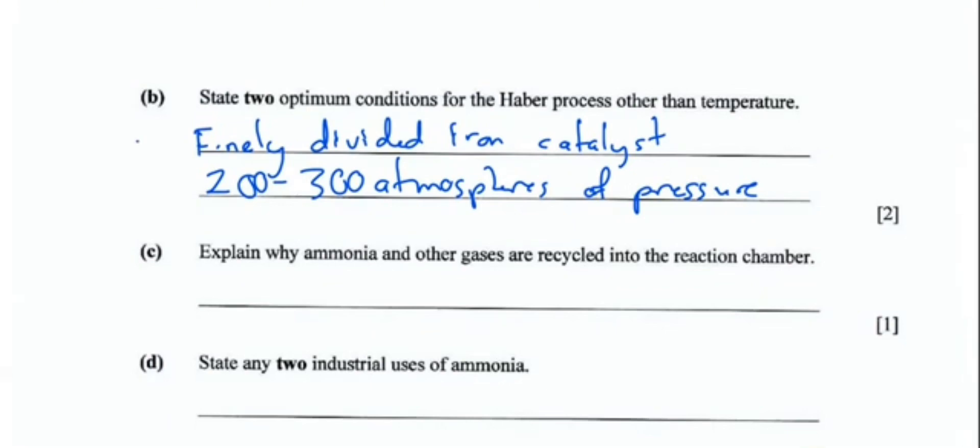The next part says explain why ammonia and other gases are recycled into the reaction chamber. Once the reaction is reversible, it does not go to completion. Therefore the proportion of ammonia in the mixture is about 15 percent only. Ammonia, because it has a higher boiling point than nitrogen or hydrogen, is easily condensed upon cooling and then it is collected at the bottom. The unreacted nitrogen and hydrogen gases are recycled into the reaction chamber where they're going to be re-passed over the finely divided iron catalyst. By continuous recycling in this way, each 15 percent adds up to an eventual 98 percent yield.